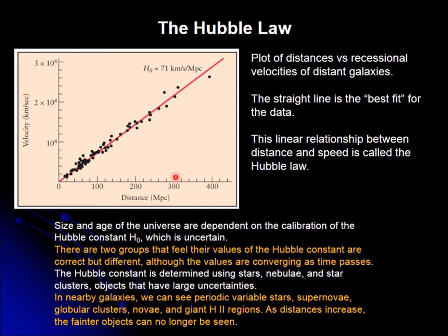There are also variations coming from the type of object that people use — for instance, we can measure the Doppler shift of stars, or nebulae, or clusters, etc. And of course, they have different uncertainties depending on how well we can see them and how well we can detect the Doppler shift.